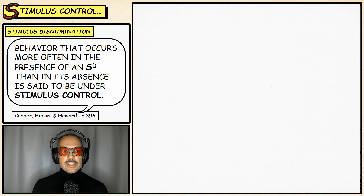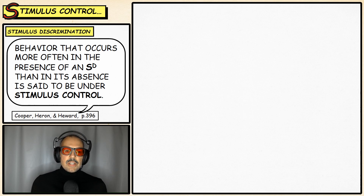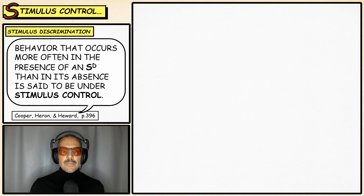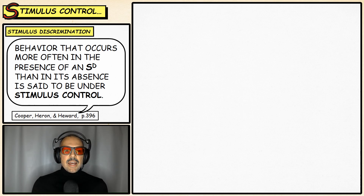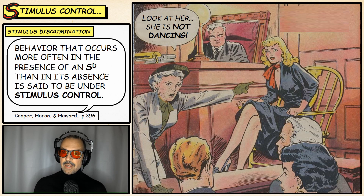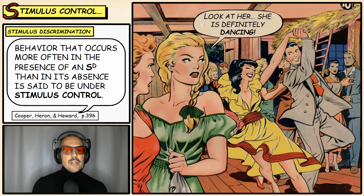Backing up: Cooper, Heron, and Heward stated that behavior occurring more often in the presence of a discriminative stimulus than in its absence is under stimulus control. We do this every single day. For example, hopefully nobody has had to be in a courtroom, but if you are in a courtroom, you probably did not dance — we do not dance in a courtroom. However, we do dance at a barn dance. In this case, the barn is a discriminative stimulus for dancing.